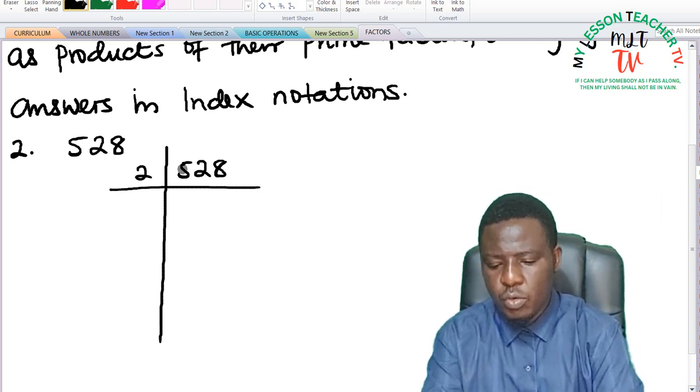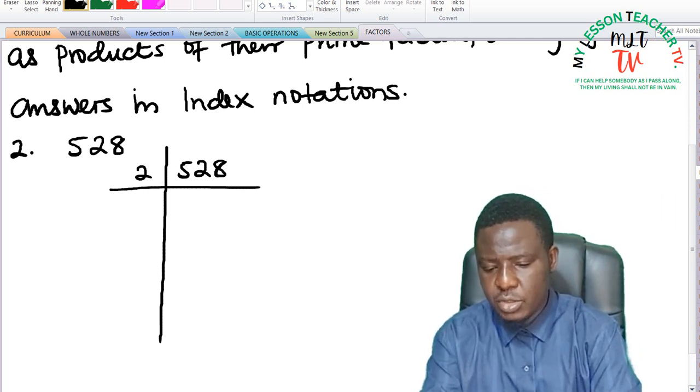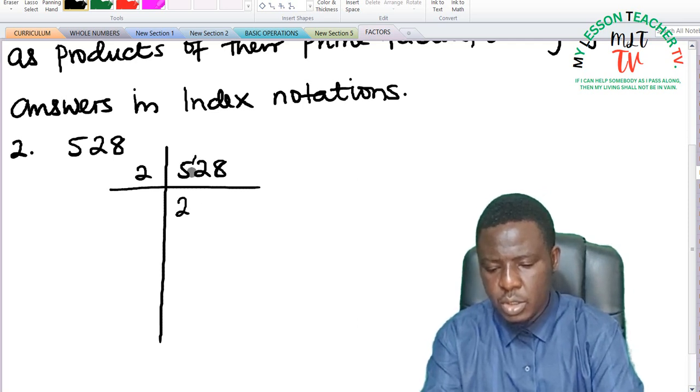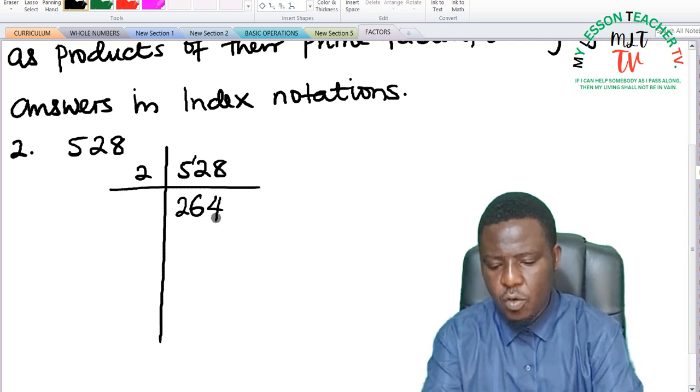So 2 into 500... 2 into 5 is 2, remainder 1. 2 into 12 is 6, and 2 into 8 is 4. This gives us 264.